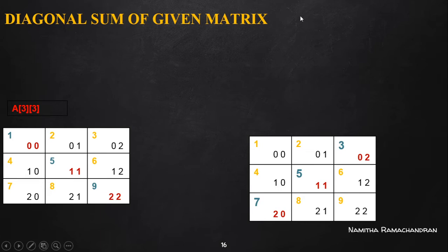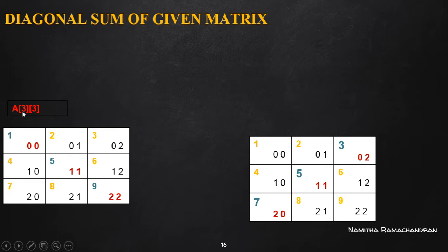For finding the diagonal sum of a given matrix, we need to check whether the given matrix is a square matrix or not. A square matrix means the row size is equal to the column size — that is, the number of rows equals the number of columns. The diagonal sum is valid only with square matrices.